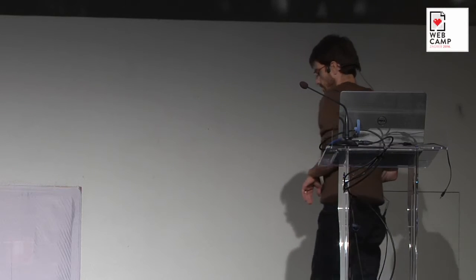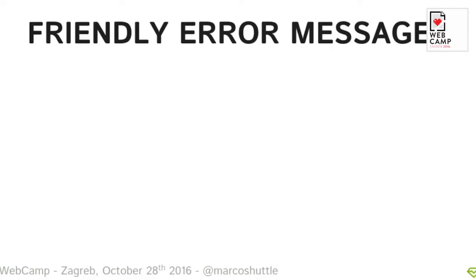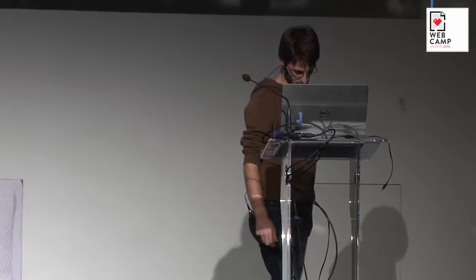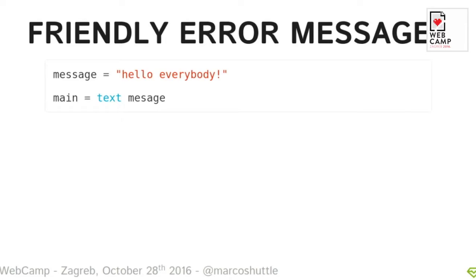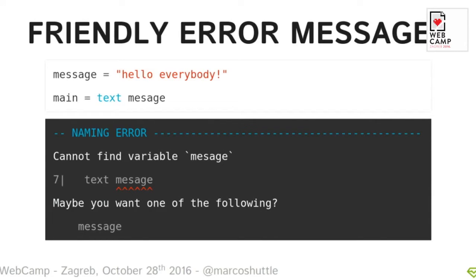The jargon the compiler speaks is actually really friendly error messages. You write some code and try to compile it. The compiler might say your code is fine, or it will say you screwed up and tell you why. For example, one of the easiest possible errors: we have a variable which contains a string and we pass it to a function called text, but we have a typo. The compiler will tell us: 'you got a naming error — I cannot find the variable massage you're using there. Maybe you wanted to use the variable message.' It tells you exactly which line and which word you're getting wrong.